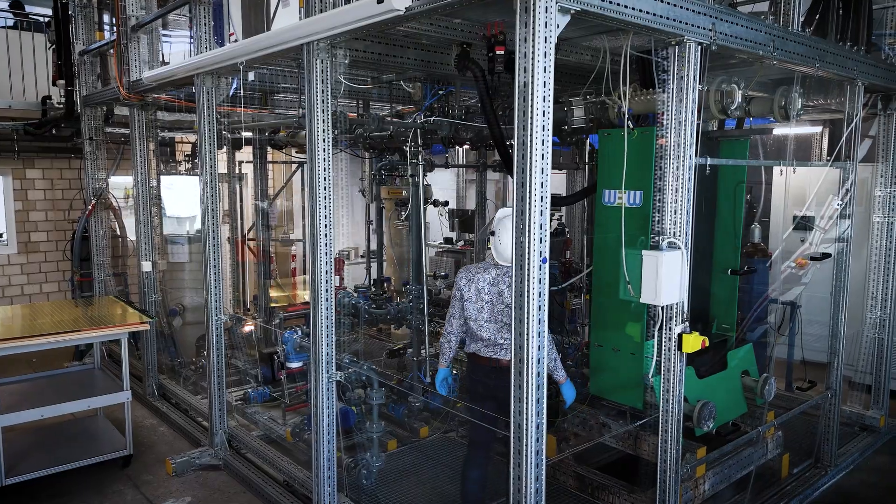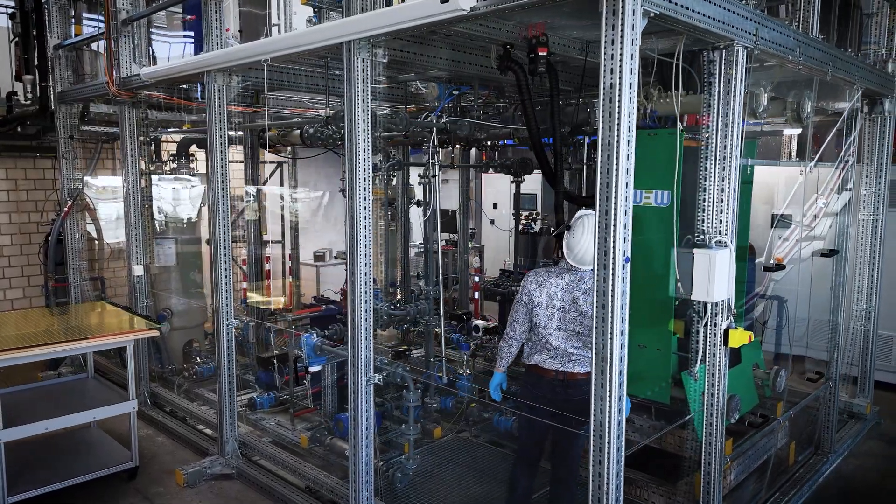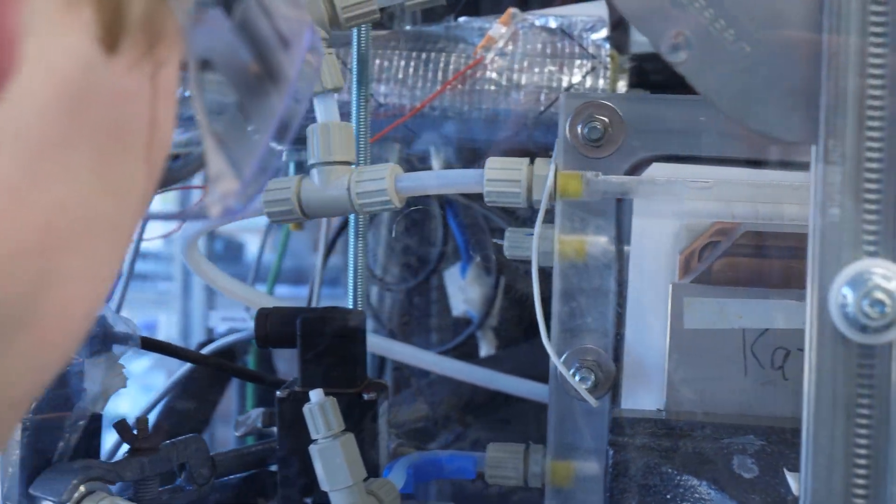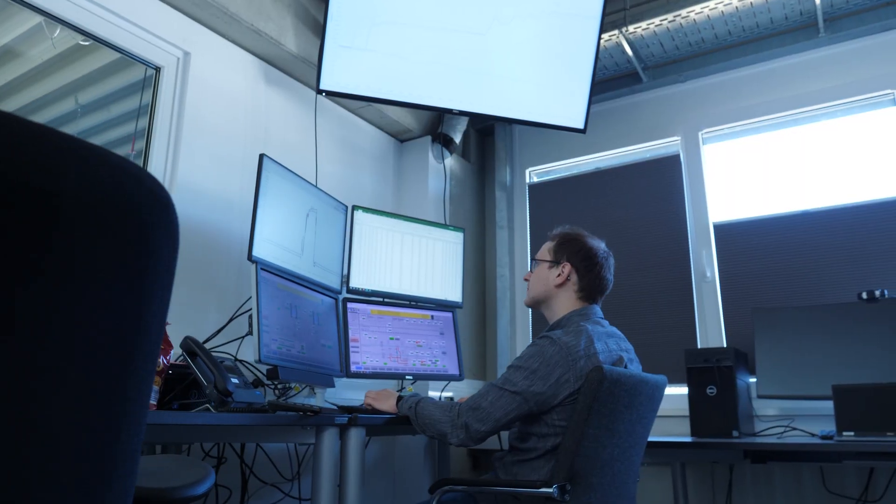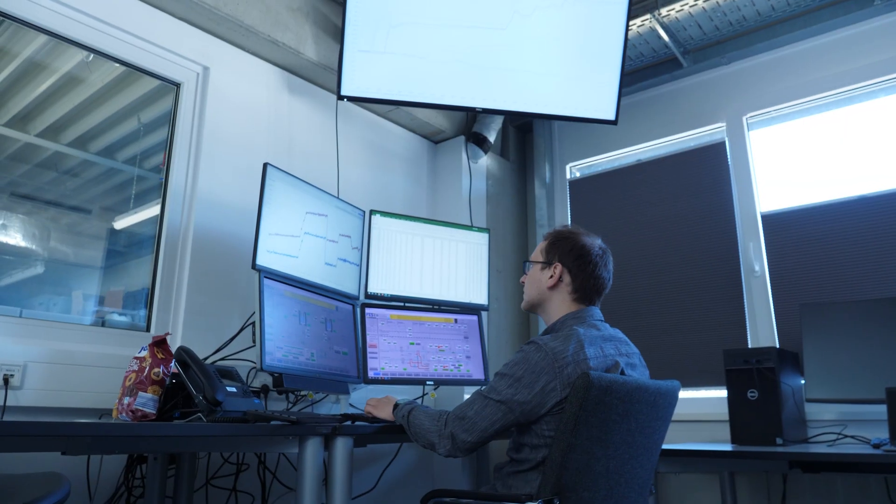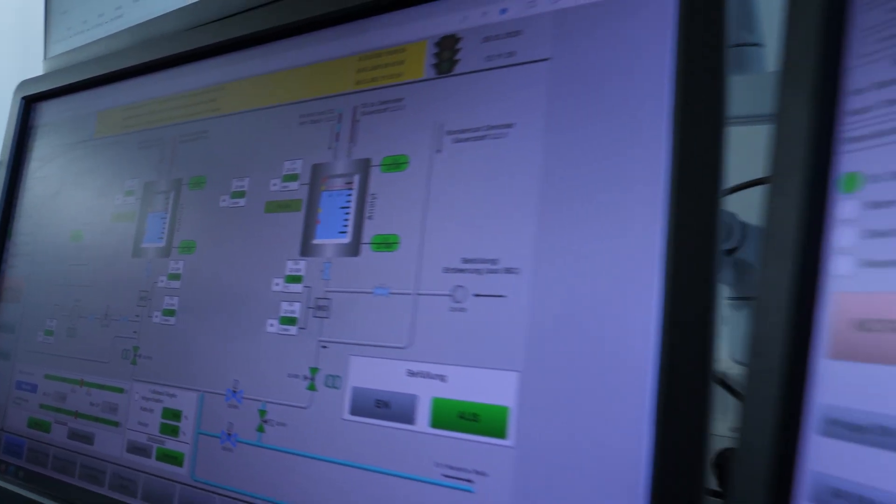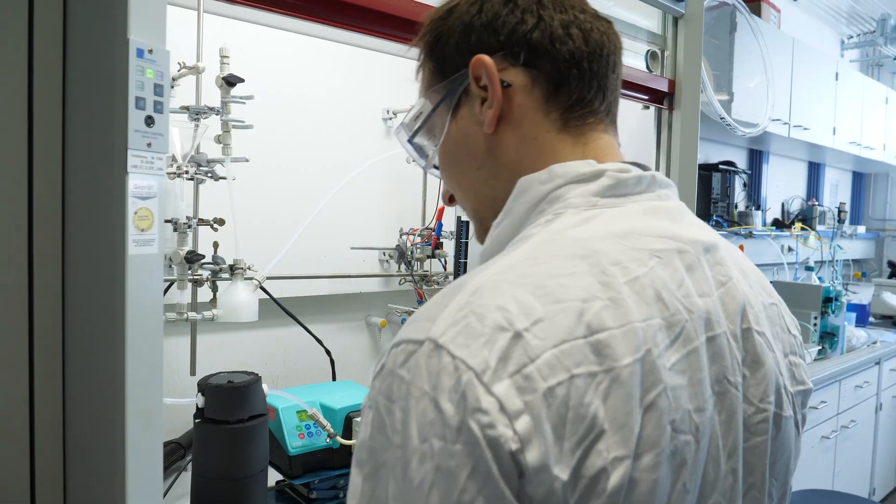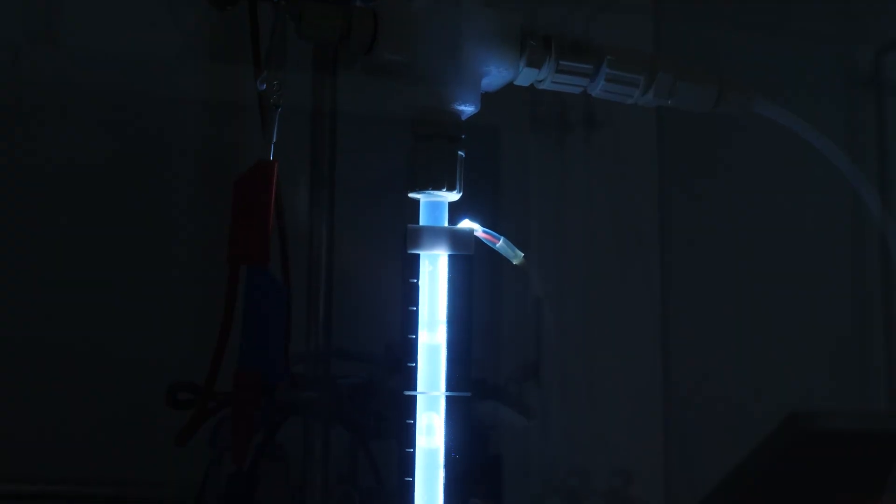Our research focuses on key areas crucial for the advancement of alkaline water electrolysis. We investigate control loops and process inertia as well as grid fault behavior to ensure reliability. Furthermore, we develop effective start-up concepts and examine long-term stability by analyzing degradation processes.